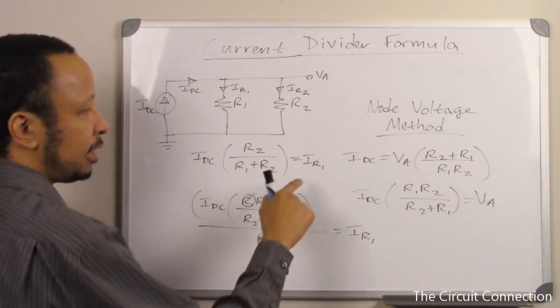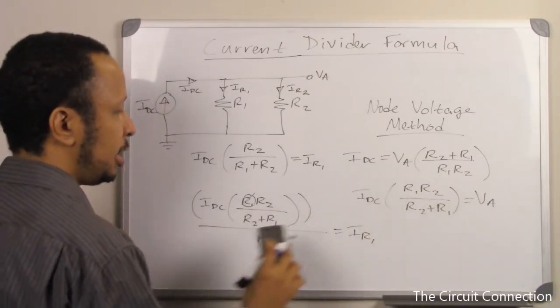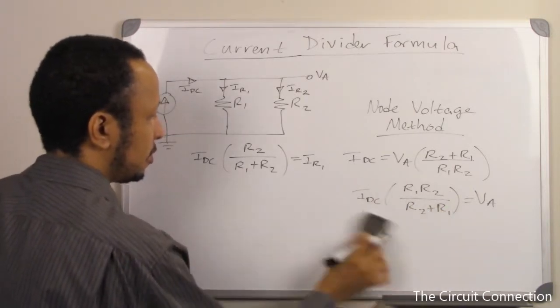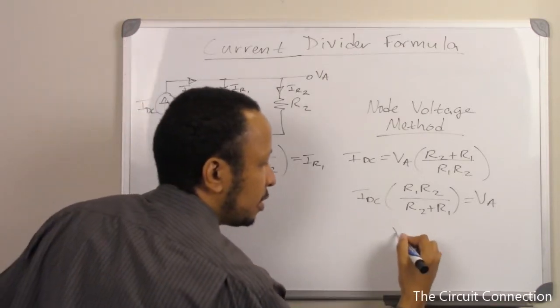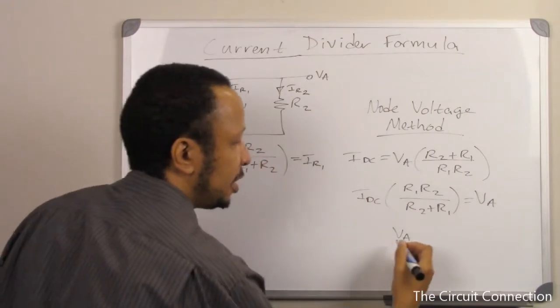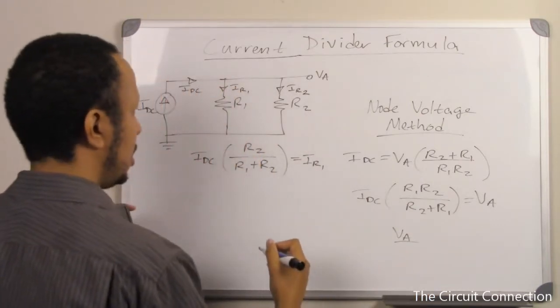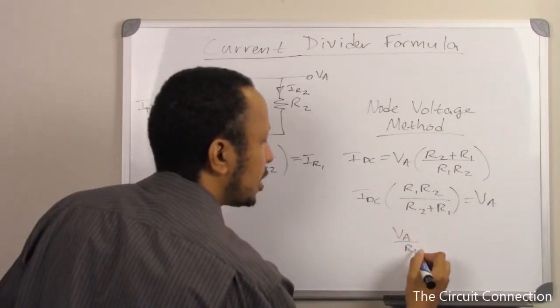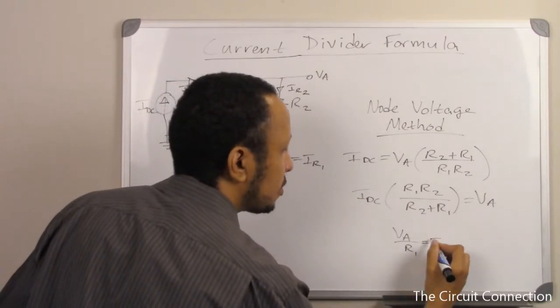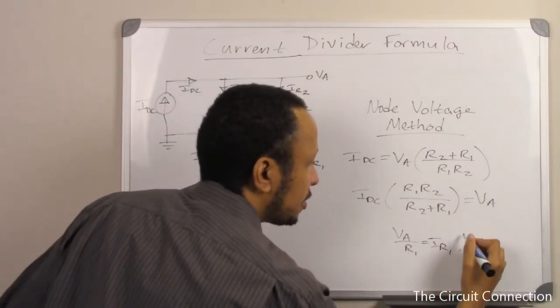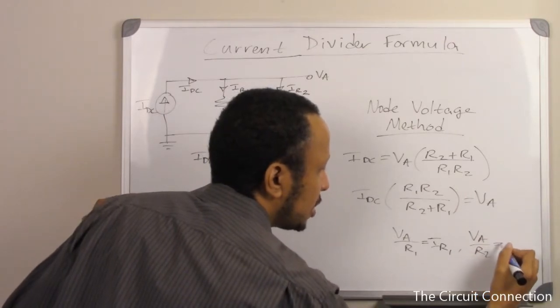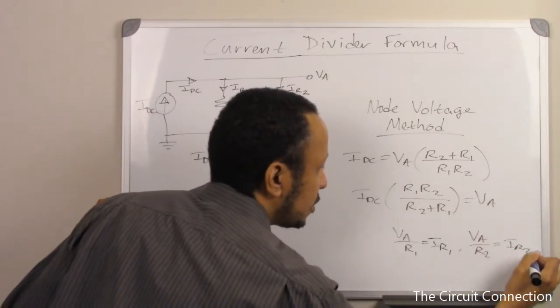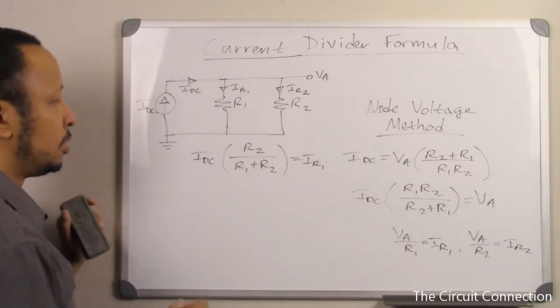Next, we'll use this expression again, taking notice of the fact that VA, first we did VA over R1 gives us IR1. Now, we're going to do VA over R2 gives us IR2.